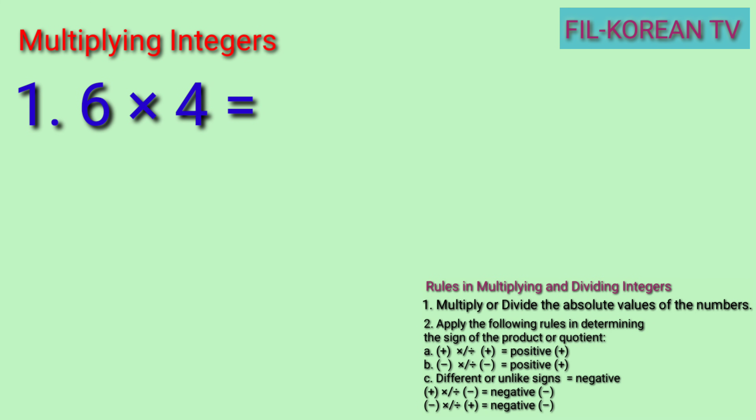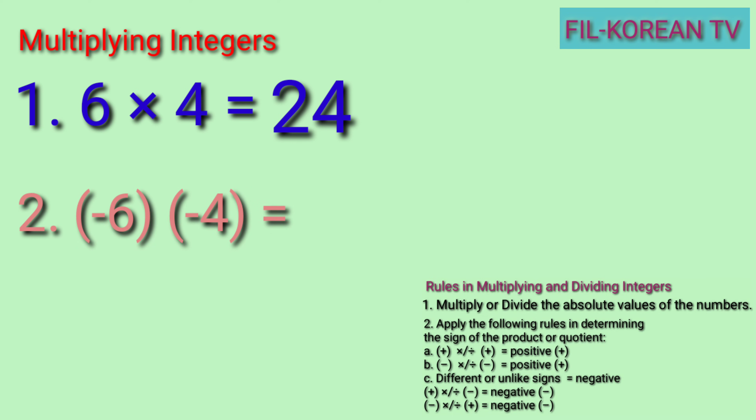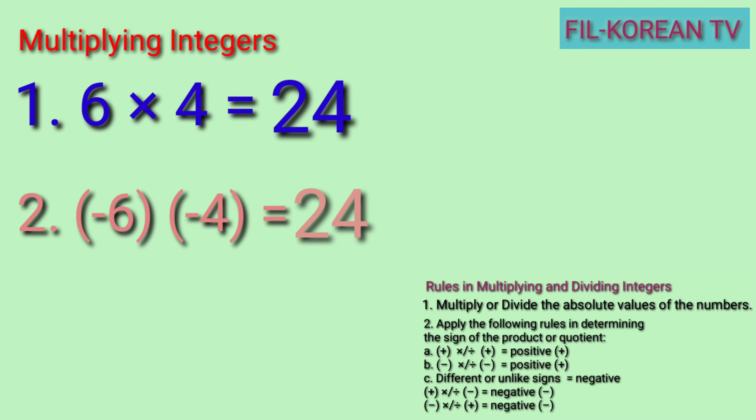Let's multiply 6 times 4, or positive 6 times positive 4. Both positive, so we will just multiply the numbers and the answer is always positive. 6 times 4 equals 24. Next example: negative 6 times negative 4. We will multiply — the absolute value of negative 6 is 6, and the absolute value of negative 4 is 4. Multiply the absolute values: 6 times 4 equals 24. Same sign, so the answer is always positive.